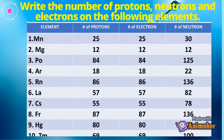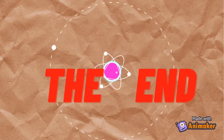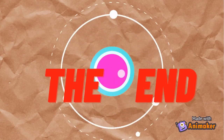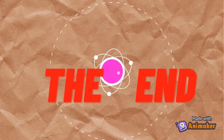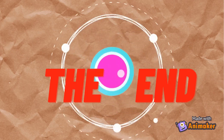For the additional activity, write the number of protons, neutrons, and electrons for the following elements. That ends our lesson for today. See you again next time. Please don't forget to click the like button and subscribe to this channel for more updates.